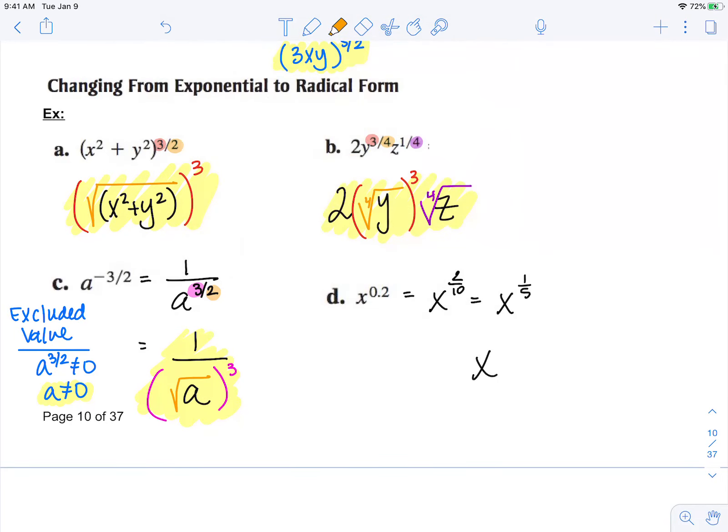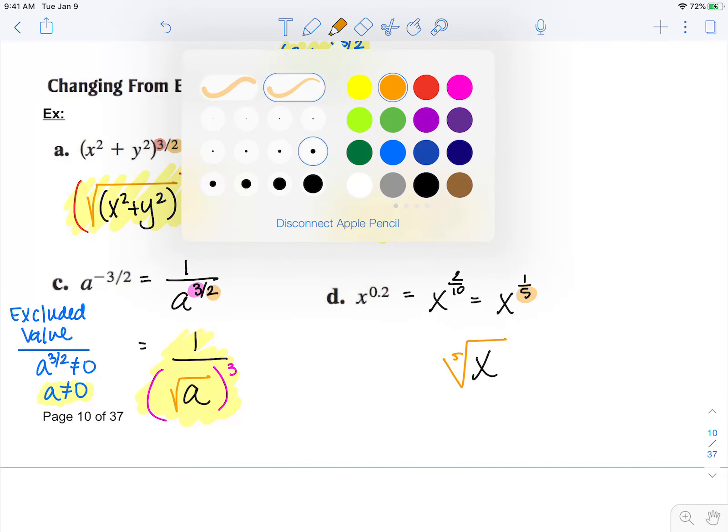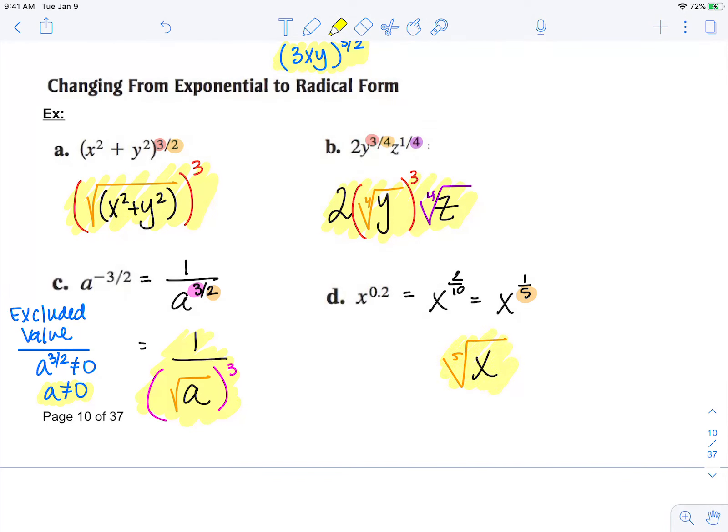So now that I have it as a simplified fraction, my denominator of my power is the index of my root, and this would be my simplified answer.